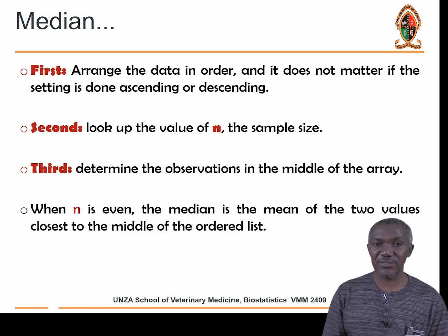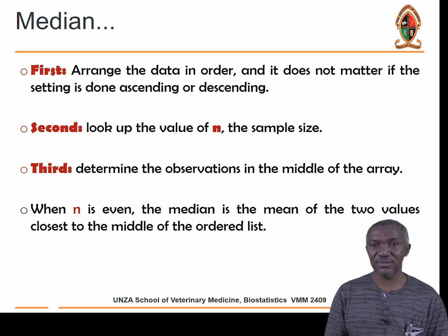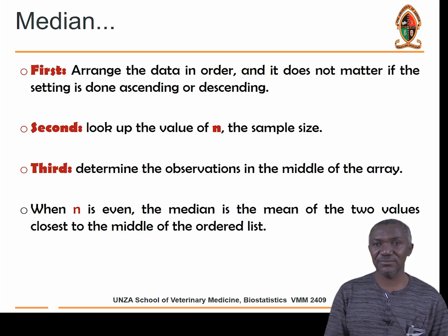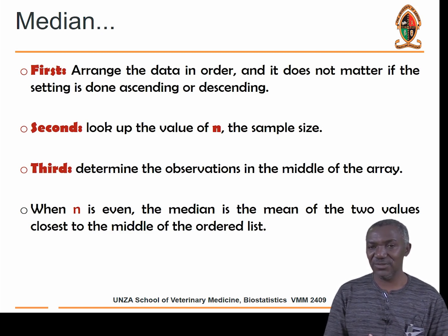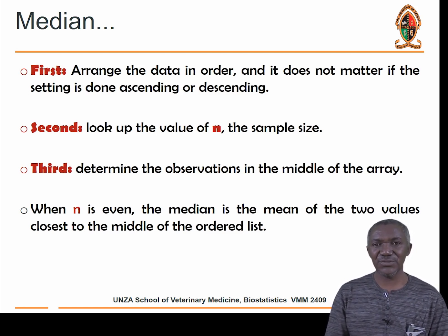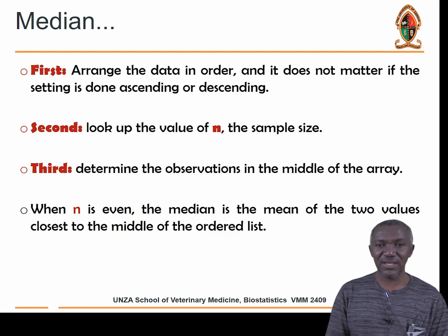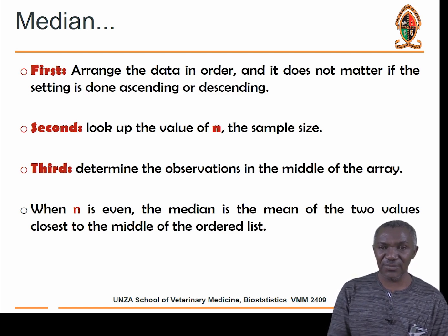To estimate the median, first arrange the data in order — either ascending or descending, though ascending is more intuitive. Then count how many values there are (N). Next, determine the observation in the middle of the array. When N is even, the median is the mean of the two values closest to the middle of the ordered list.